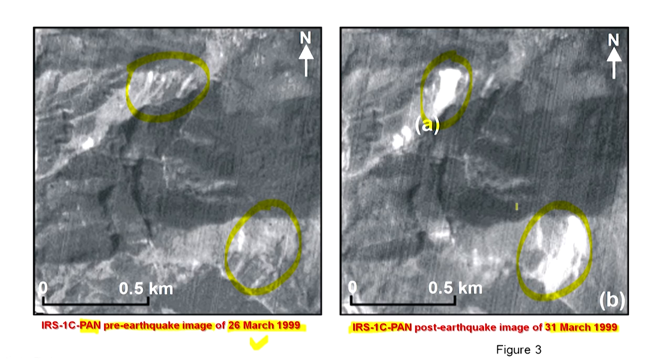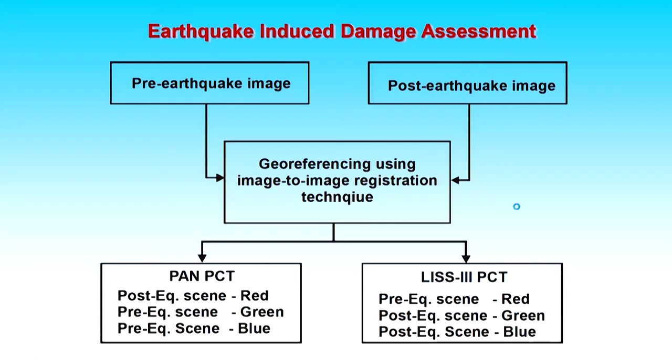Now, applying advanced image processing techniques — as we have discussed in digital image processing — we can create some pseudo color composites using this panchromatic data. To create a colored image you require three colors assigned to red, green, and blue. But here we have just two bands: one pre-earthquake and one post-earthquake. Both are panchromatic in terms of the electromagnetic spectrum.